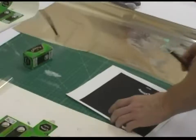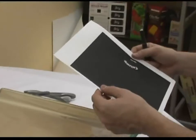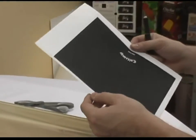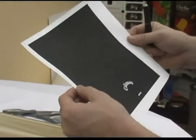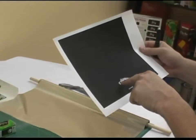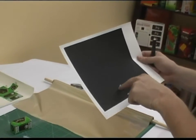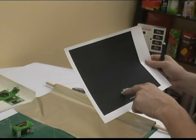The next thing we're going to do is take what we call a mask. We printed this on a black and white laser printer. Wherever your foil will be on the box, it'll be white.